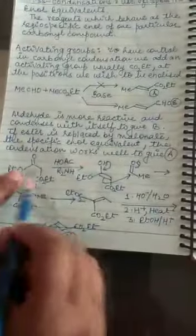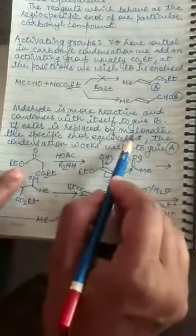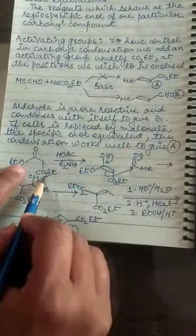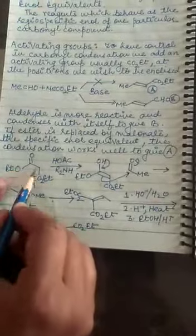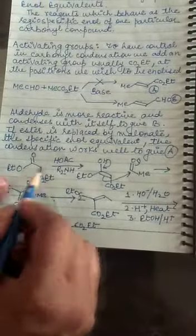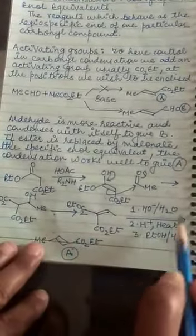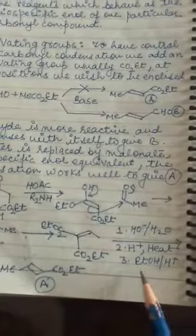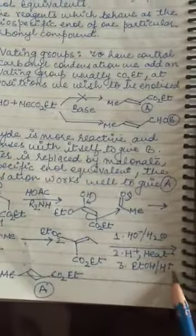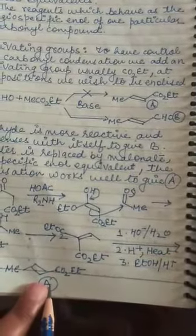Now you can say hum ne kya kiya. Yaha pe ester equivalent le liya. Us ka malonate le liya. This is the malonate. Reaction karayi. Ab ye position specific ho gai, jahan pe reaction hogi. Toh jab ye reaction aage further hogi, all the simple same reaction of the condensation. Finally hum jab iska hydrolysis karayenge, heat karayenge, or isko ethanol or acidic conditions me react karayenge, we will be getting the A.